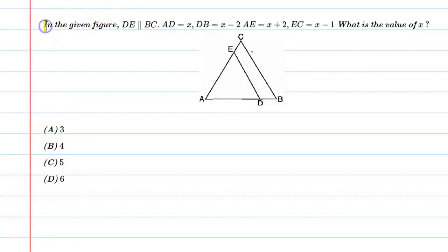Hello students, let's solve this question. In the given figure, DE is parallel to BC, AD is equal to x, DB is equal to x minus 2, AE is equal to x plus 2, EC is equal to x minus 1. What is the value of x?